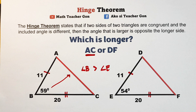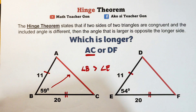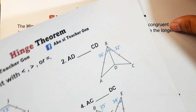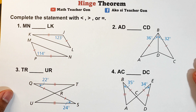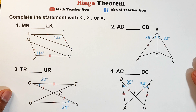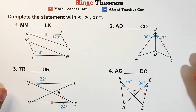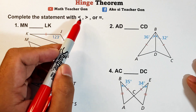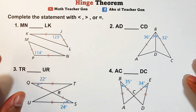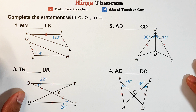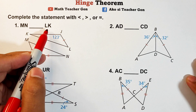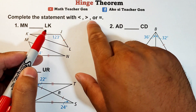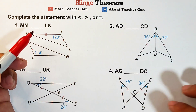Now let's have more examples so you can see where you can use the Hinge Theorem in your studies. We need to complete each statement using the symbols less than, greater than, or equal, using the idea of the Hinge Theorem. Let's start with: MN blank LK — which is the appropriate symbol to use here?